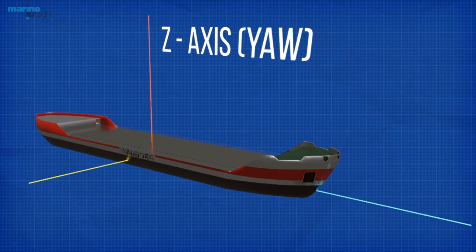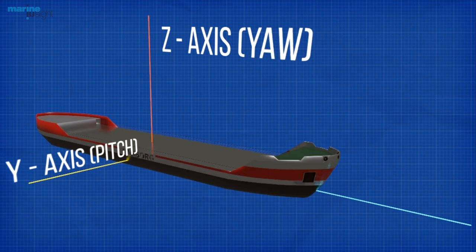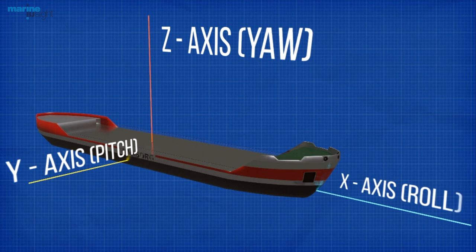The transverse or y-axis, also known as the lateral axis or pitch axis, is an imaginary line running horizontally across the ship and through the center of mass. The longitudinal or x-axis, also known as the roll axis, is an imaginary line running horizontally through the length of the ship, through its center of mass, and parallel to the water line.